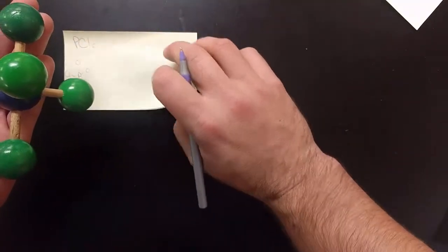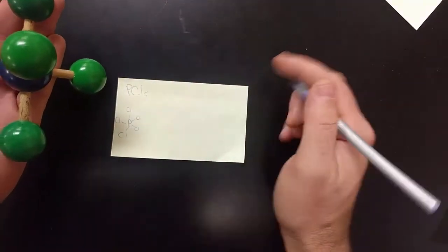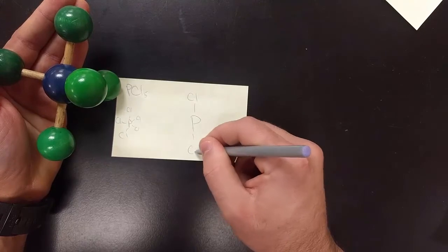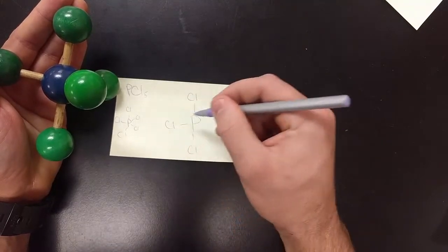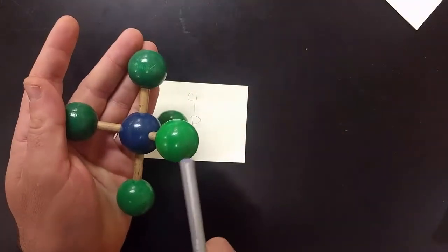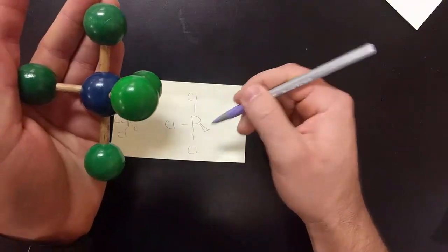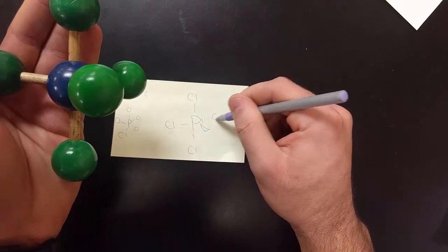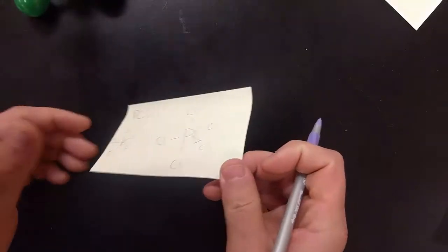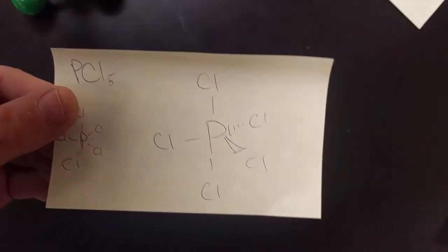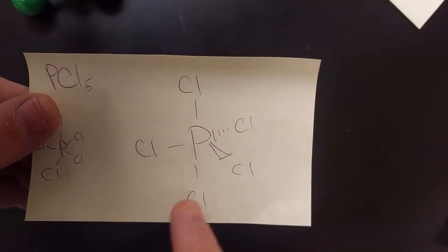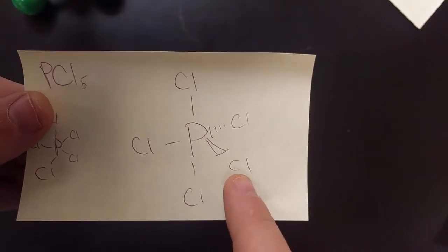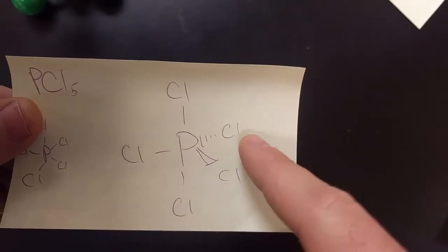I'll draw phosphorus in the middle, a straight line to the chlorine up top, a straight line to the chlorine on the bottom, and a straight line to the chlorine going out to the side. Then one chlorine coming out towards me gets a wedge, and one going away gets a dash — chlorine, chlorine. This shows the three-dimensional shape: the wedge chlorine is coming out towards you, and the dash chlorine is going away from you.